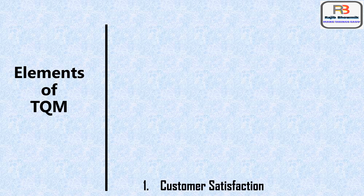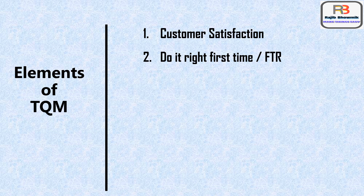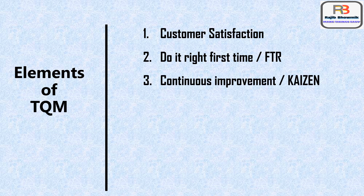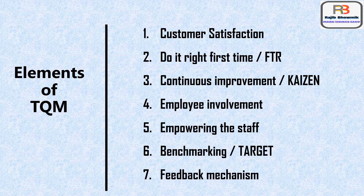Now let us see what are the elements of TQM. Customer satisfaction — do it right first time, some people call it FTR, that is First Time Right. Then continuous improvement through Kaizen. Employee involvement, then empowering of staff, because only employee involvement will not be sufficient — you need to empower them also. Then benchmarking, meaning there should be some target against which improvement should be done. And then a feedback mechanism, meaning after every improvement there should be some feedback.